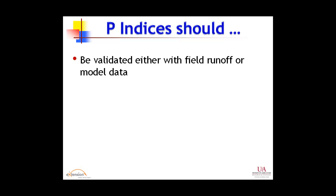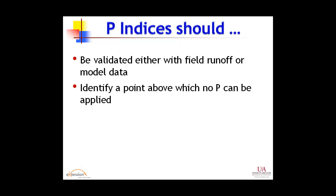These tools needed to be validated - assessed and compared with field runoff or model data. The revision of the 590 index needs to define a point above which no phosphorus can be applied. Several states didn't do that - not through any fault of theirs, it just wasn't on their radar at the time. I had a call from someone in one state who had basically given himself a week to develop the index for that state. It was just a different priority at that time.